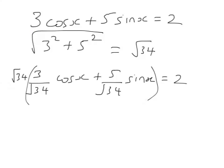3 squared, 5 squared, 3 squared, 5 squared, 34. So two things. How did I get the square root of 34? By doing Pythagoras on 3 and 5. Why did I do it? We'll find out in a minute.